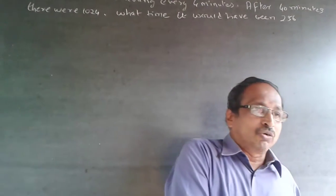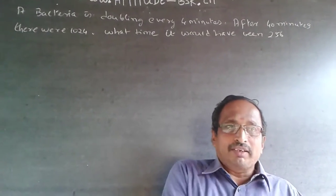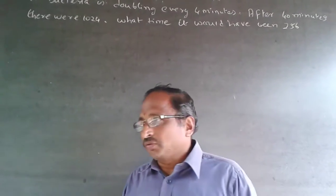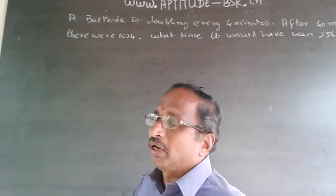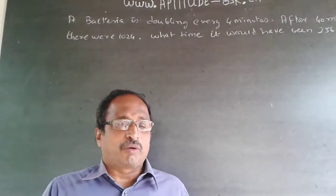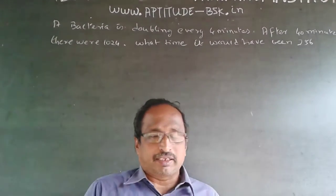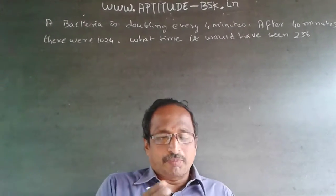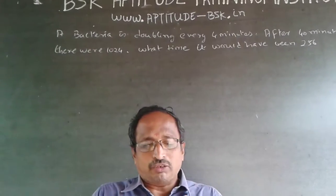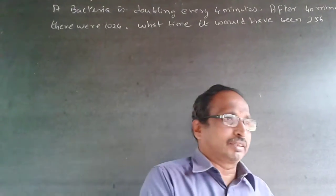It will double to two in four minutes, then become four at eight minutes, and so on — doubling every four minutes. So the time values go 0, 4, 8... and the counts go 1, 2, 4, 8 like this.